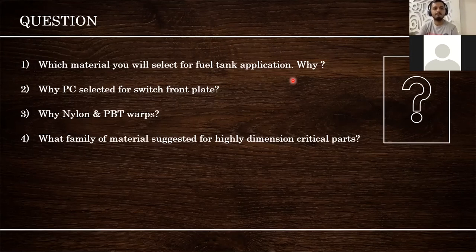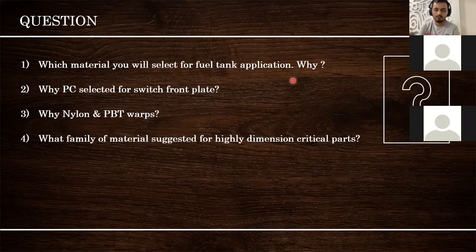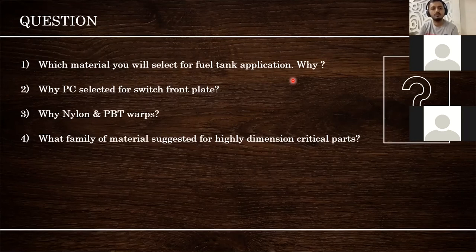Next question: why is polycarbonate used in switches rather than PP or nylon? Because every time you use the switch it must withstand impact — polycarbonate has good impact strength. Second, it has a very good glossy appearance; amorphous plastics have very good glossy finish and can be given good colors that shine. Moreover, when fire retardant is added it also has good electrical properties.